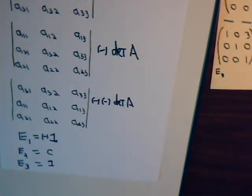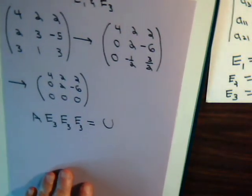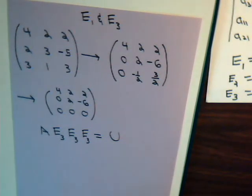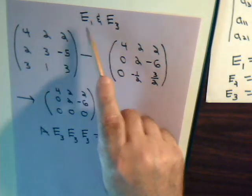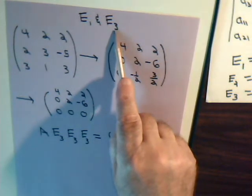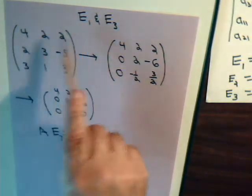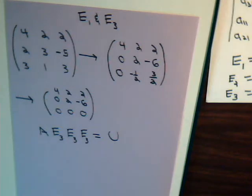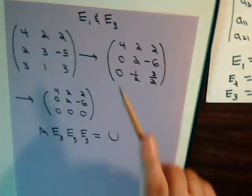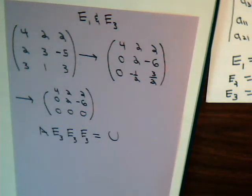Now we want to use this information. Suppose we have a matrix and we want to see if we can get it into upper triangular form using the Gaussian technique, using only type-one and type-three elementary matrix operations — in other words, not multiplying rows by any constant. Normally in Gaussian elimination, the first thing we'd do is multiply a row by one-fourth to make a one, but we don't want to do that. We want to only exchange rows or multiply one row by a constant and add it to another.